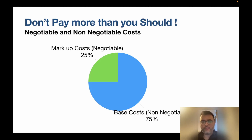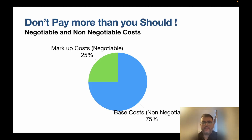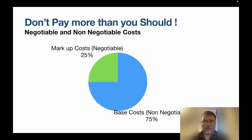This slide says 'Don't pay more than you should' — and that's precisely why we're talking about the different kinds of fees involved in payments processing. At a very high level, there are basically two different kinds of costs: the first is called negotiable costs and the second is called non-negotiable costs. There are certain costs you don't have much control over as a merchant, but there are certain costs on which you do have some control.